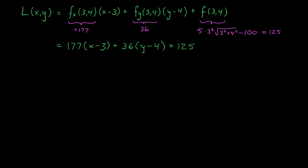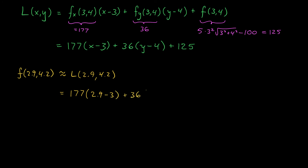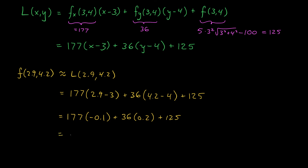We can now use the tangent plane to approximate the value of our function. F(2.9, 4.2) is approximately equal to L(2.9, 4.2). Plugging these points in: 177 times (2.9 − 3) plus 36 times (4.2 − 4) plus 125. That gives us 177 times (−0.1) plus 36 times (0.2) plus 125, which is −17.7 plus 7.2 plus 125. That leaves us with −10.5 plus 125, which is 114.5 degrees Celsius.